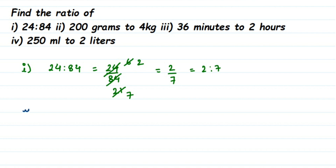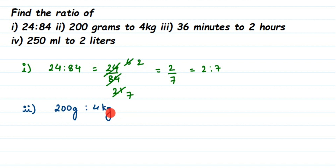The second question is quite different. We have 200 grams is to 4 kg. Whenever you write a ratio, it should always be in the same unit. Here one is in grams and one is in kg. I'll convert kg into grams to avoid decimals. Since 1 kg = 1000 grams, 4 kg = 4 × 1000 = 4000 grams.